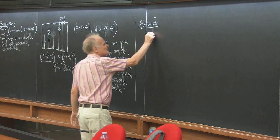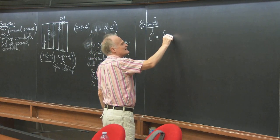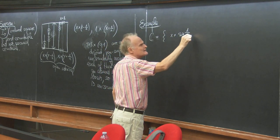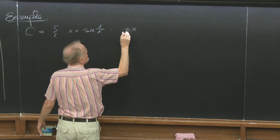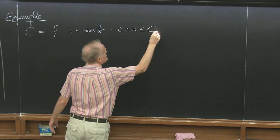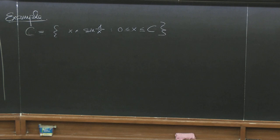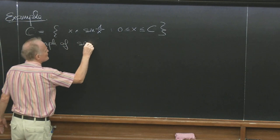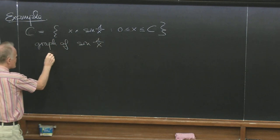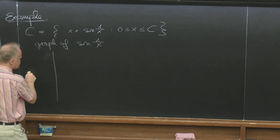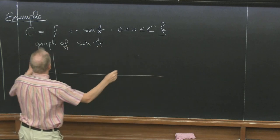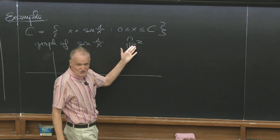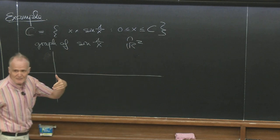So here's another example. We take C as the graph of x times sin(1/x), where x is a real number, x bigger than 0 and smaller than some constant. This is a graph of the function sin(1/x), which is a subset of the plane with the subspace topology — a subspace of R².